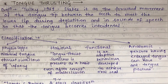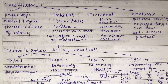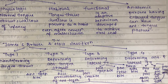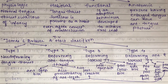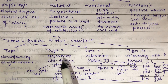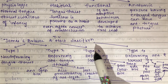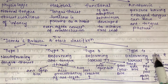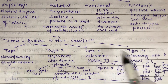In the anatomic form, a person with an enlarged tongue can have anterior tongue pressure. The second classification was given by James and Townsend: Type 1 is non-deforming tongue thrust, Type 2 is deforming anterior tongue thrust, Type 3 is deforming lateral tongue thrust, and Type 4 is deforming anterior and lateral tongue thrust combined.